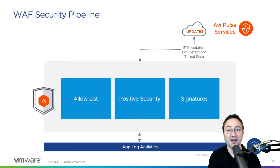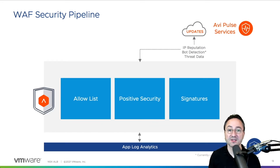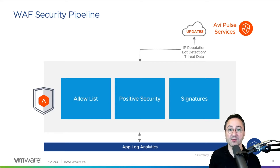To understand the allow list we first have to understand the RAV security pipeline. It consists of three modules: the allow list, the positive security, and the signatures. All of the modules work together to provide the full application firewall protection. They are supported by the industry-leading app log analytics provided by the RAV platform.